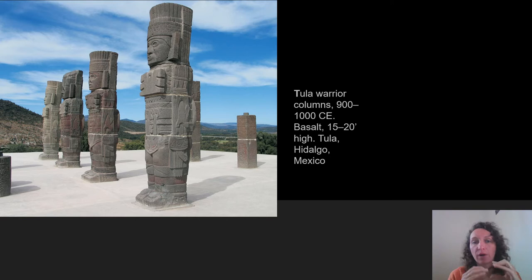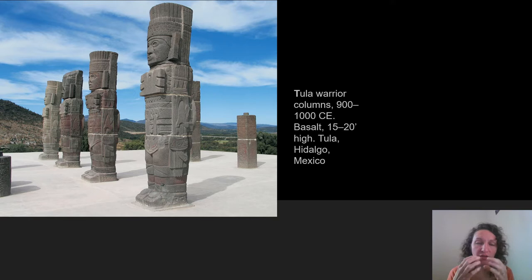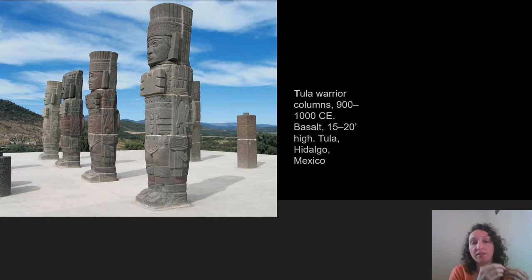Here we see the Tula warrior columns that would have held up the roof of a temple in Tula, the largest and religious city of the Toltec empire. These are made of basalt — that same hard volcanic stone — and we see the figures in their full warrior garb, wearing warrior suits and holding weapons. The imagery is tightly packed against the body, standing at attention and ready. This is a religious center, and comparing these columns to Greek columns — also used in religious settings — these make a much more bold statement about the power of the Tula warriors.